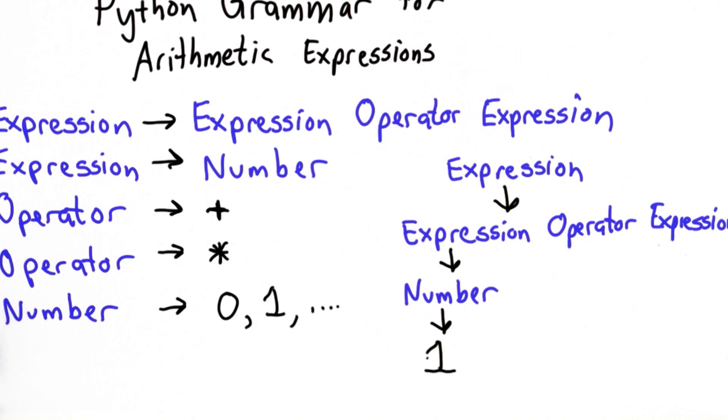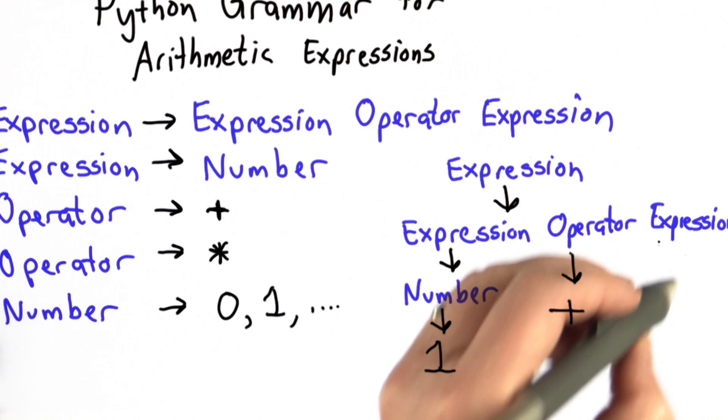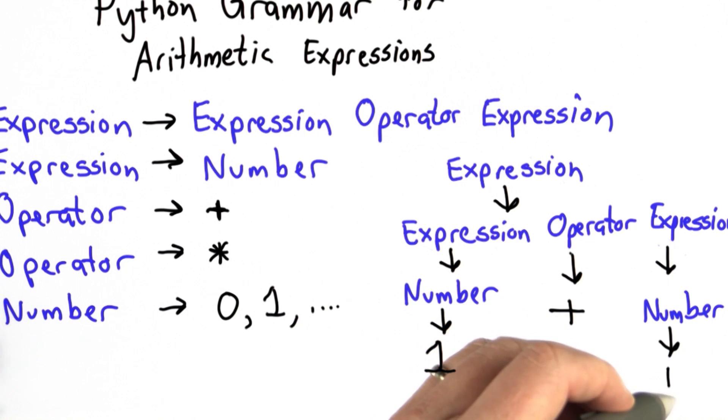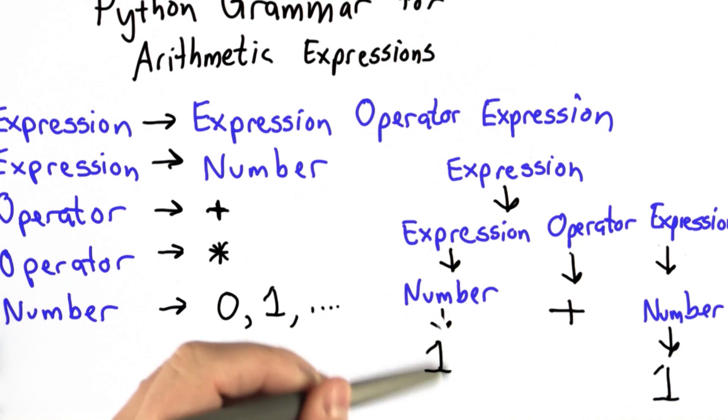We'll notice the actual numbers are terminals. So once we get to the number 1, we're done. There's no more replacements to do. We can replace the operator with plus. Plus is also a terminal. And we can replace this expression with a number and replace that number with the number 1. This is how we got the expression 1 plus 1 in the Python grammar, and that's why that was valid.